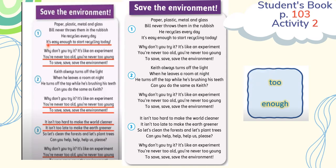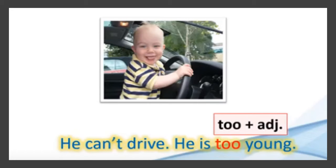Today we are going to talk about 'too' and 'enough.' Look at this example: He can't drive. Why? He is too young. As we notice, 'too' is followed by the adjective — 'too young.' We use 'too' to talk about inability. We can combine two sentences: 'This boy is too young to drive the car.'